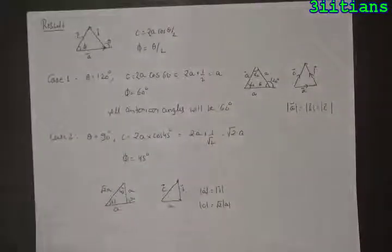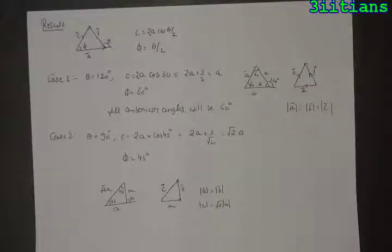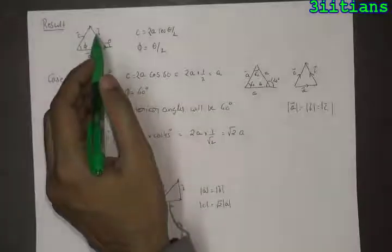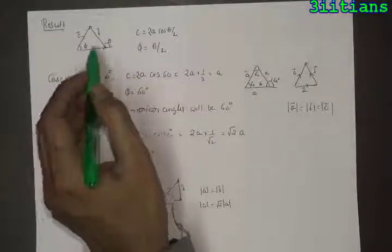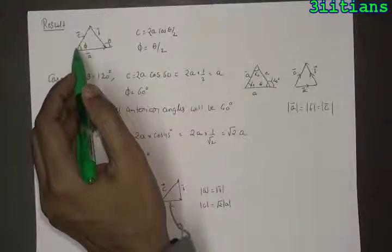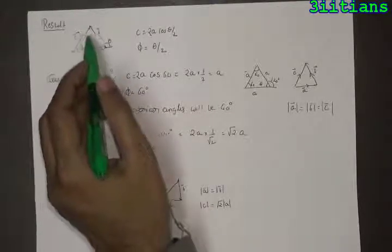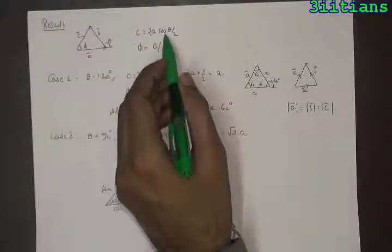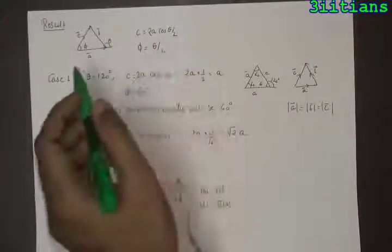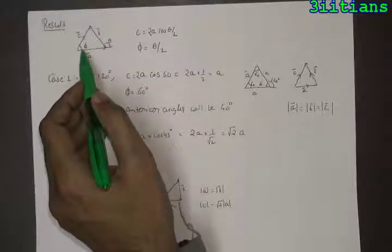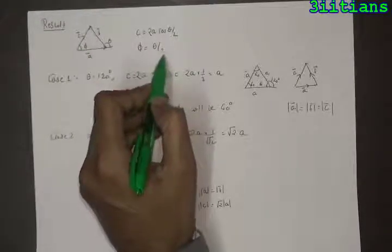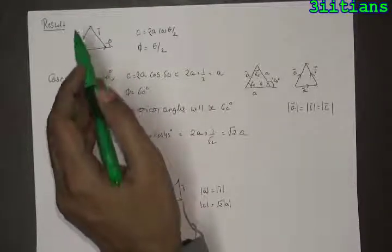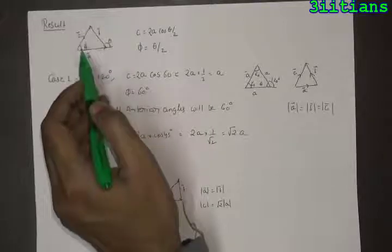The result to remember is: if these are two vectors of equal magnitude, the sum of these two vectors will be represented by the third side of the triangle whose magnitude is equal to 2a cos(theta/2), and it will make an angle phi equal to theta/2, where theta is the angle between a and b, and phi is the angle made by the c vector with the a vector.